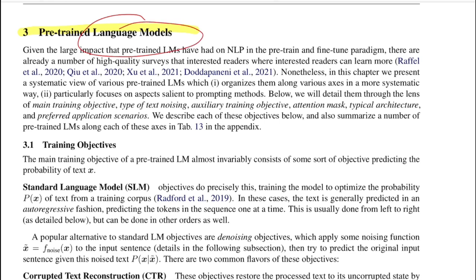Talking about language models first — as the name suggests, these are models trained specifically to model the underlying language properties, rules, semantics, syntax, and so on. Mathematically, you can think of maximizing the probability of some sequence X, where X could be all of Wikipedia, the entire Common Crawl, and so forth. So this model now knows how to model that underlying corpus.